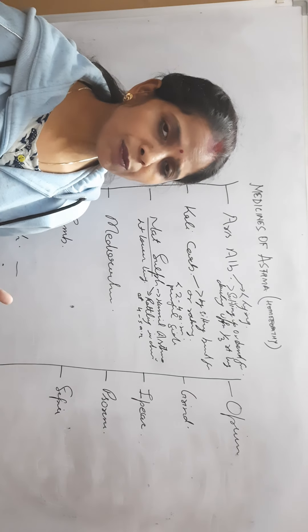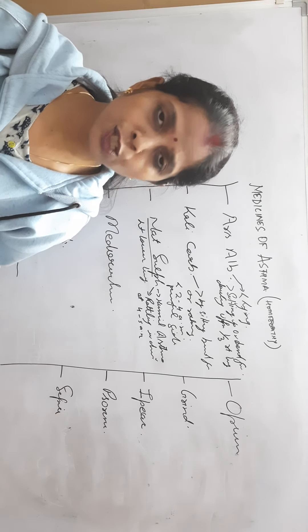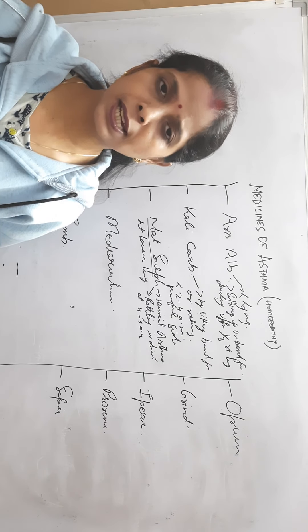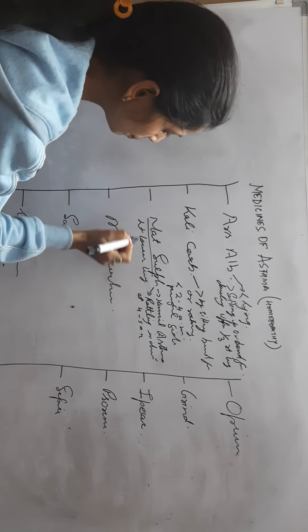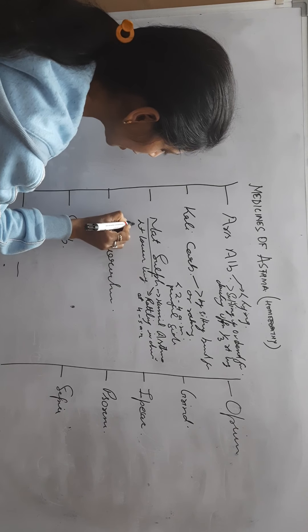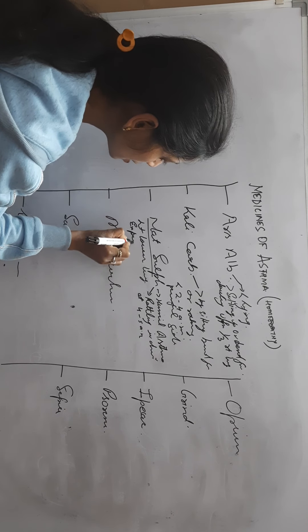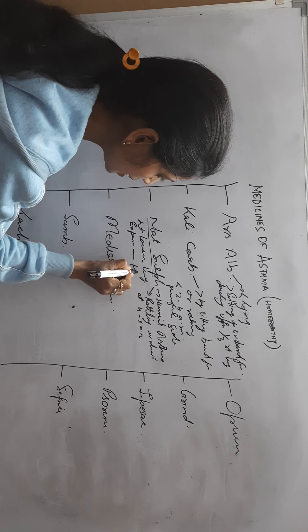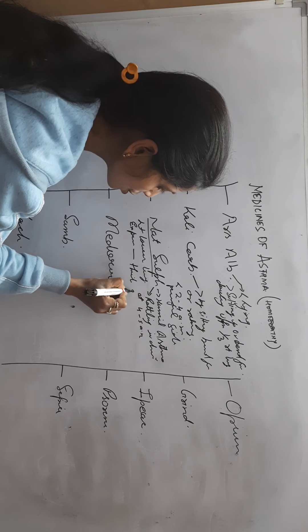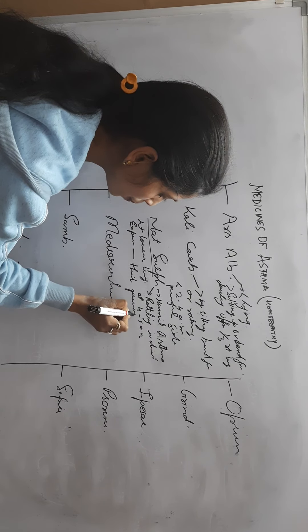While coughing, patient holds his chest, especially on the painful side. And here expectoration is thick, greenish, and ropy.